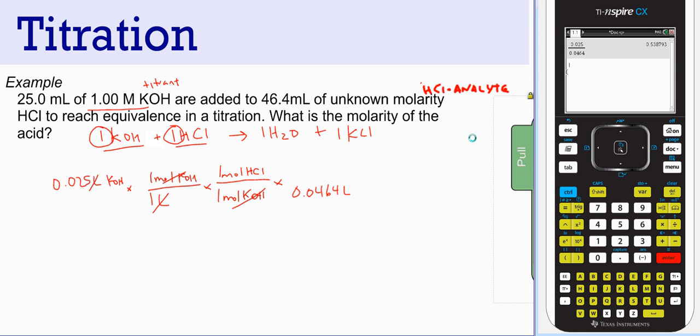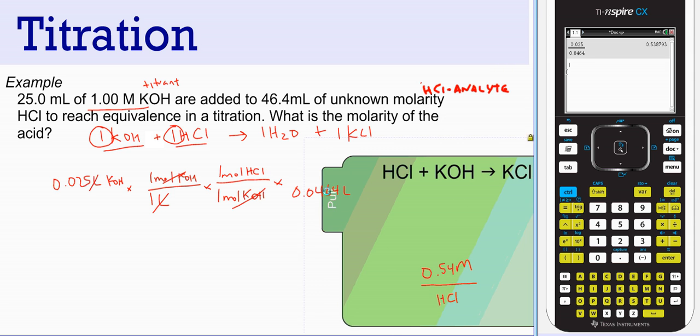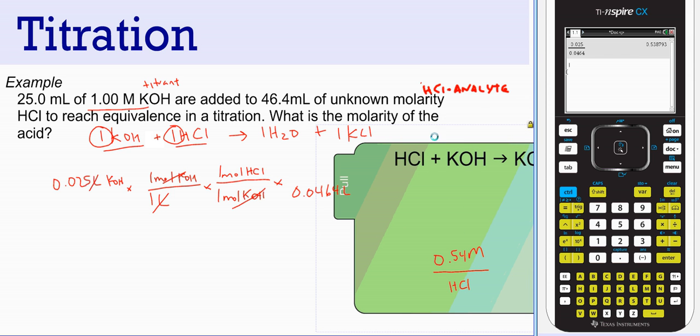The value we get is 0.538793. We should have three sig figs in our response. So 0.539 would be a better answer in sig figs. 0.539 molar hydrochloric acid was in our container.